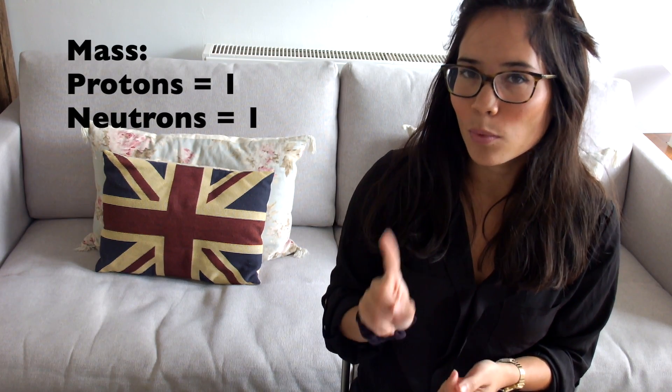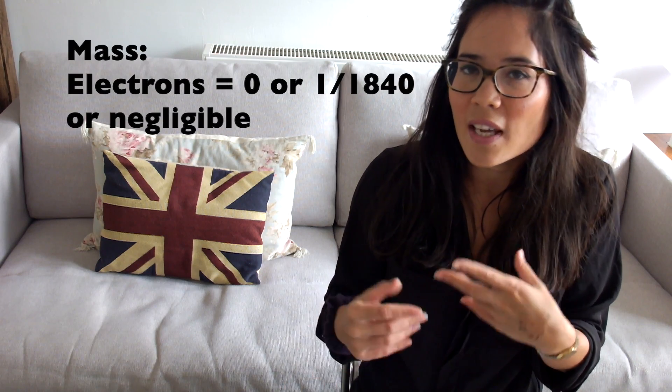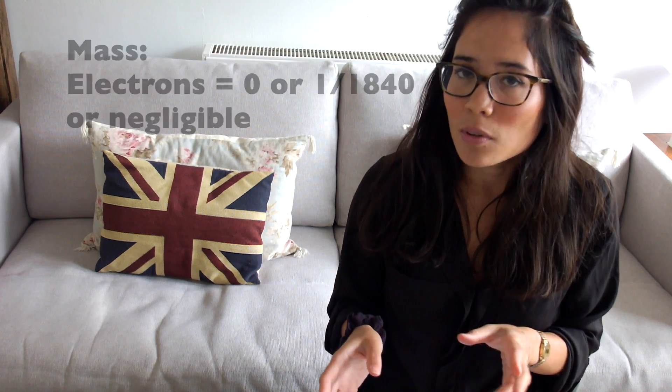We've discussed charge with some atomic particles, and now we need to understand the mass. A proton has a mass of one, and a neutron has a mass of one. However, electrons have a very, very tiny mass — you might see that written as zero, or as one divided by 1840, or you might read the word 'negligible', but these all mean the same thing. An electron has a mass of effectively zero. Therefore, when we consider the atomic mass number as seen in the periodic table, it's the neutrons and the protons that are responsible. When working out the atomic mass, you just add together the neutrons and the protons.